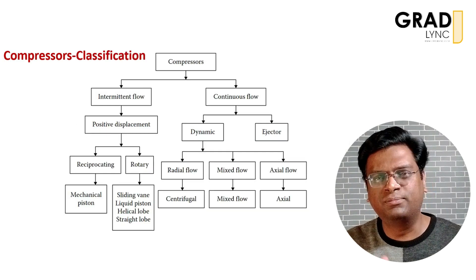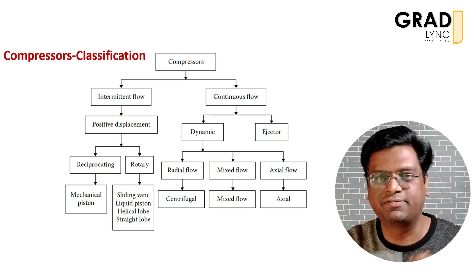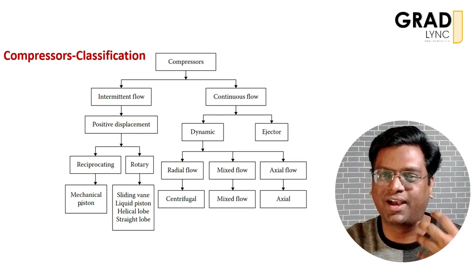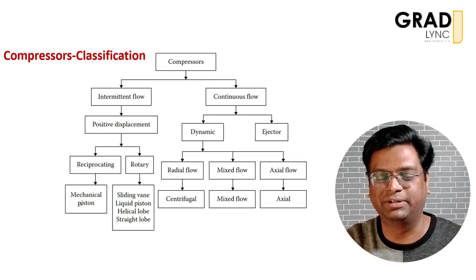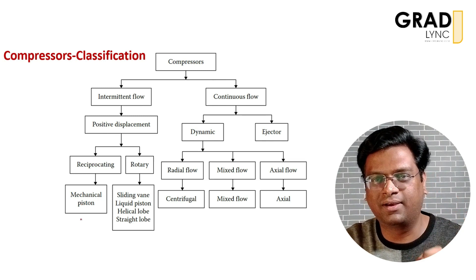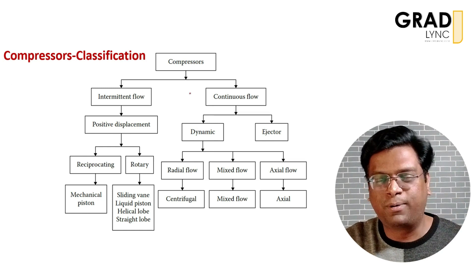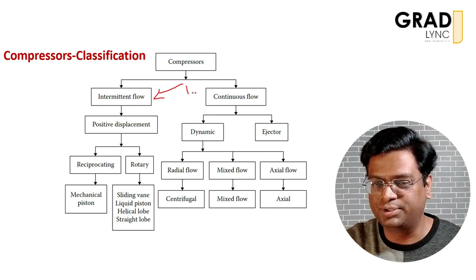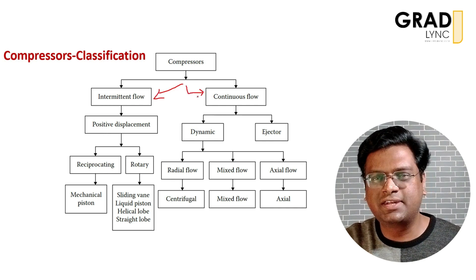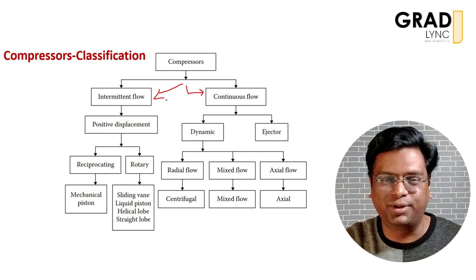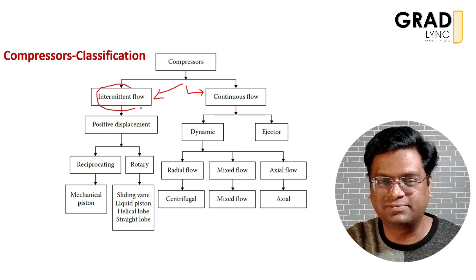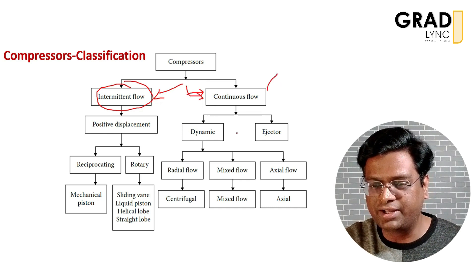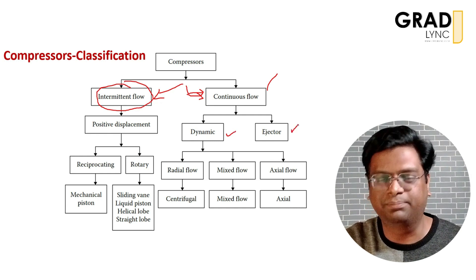Before moving on to the axial flow compressor, we will discuss different types of compressors and why we finally ended up using axial flow compressor for aircraft applications. Broadly, compressors can be classified as intermittent flow and continuous flow. As the name suggests, the flow is not continuous in the intermittent type. The continuous flow compressor can be divided into the dynamic type and the ejector type.